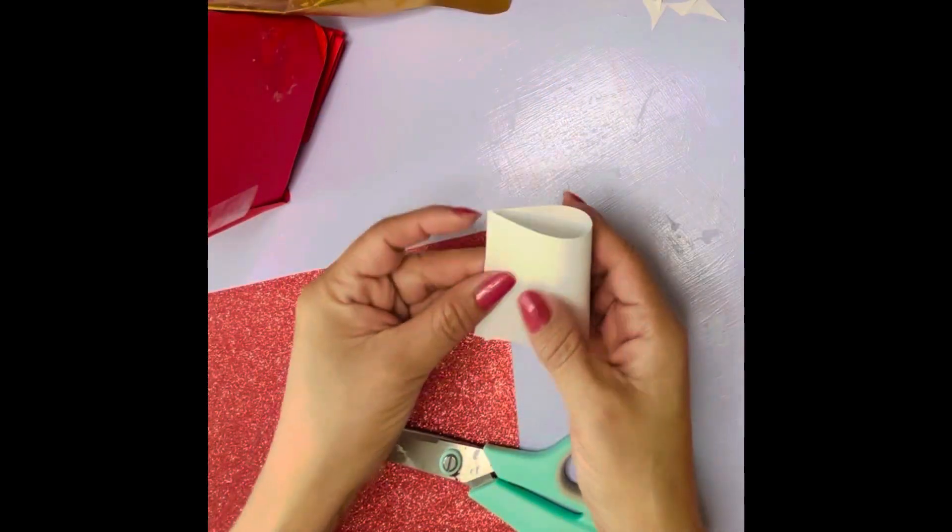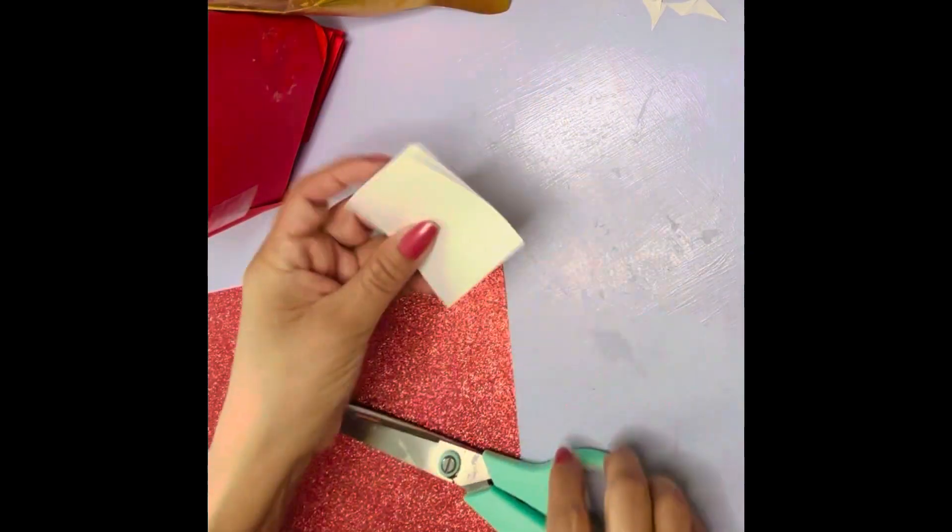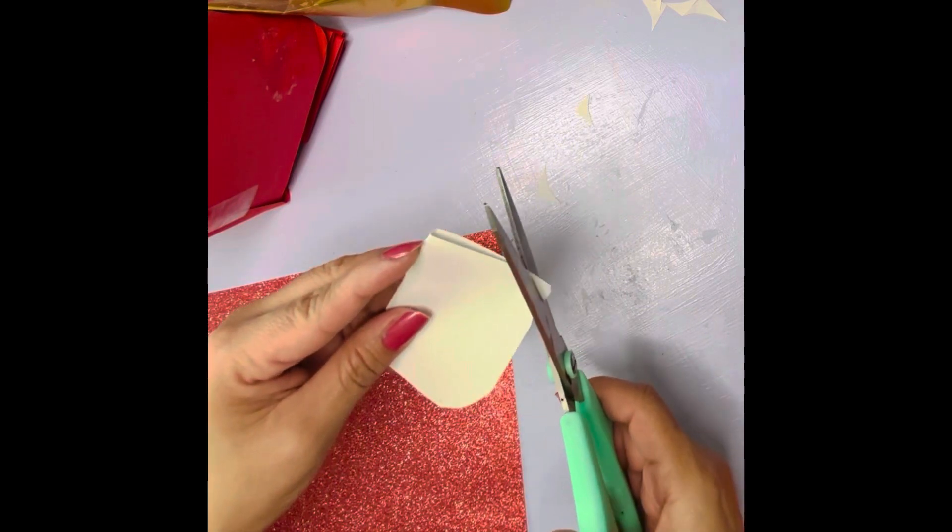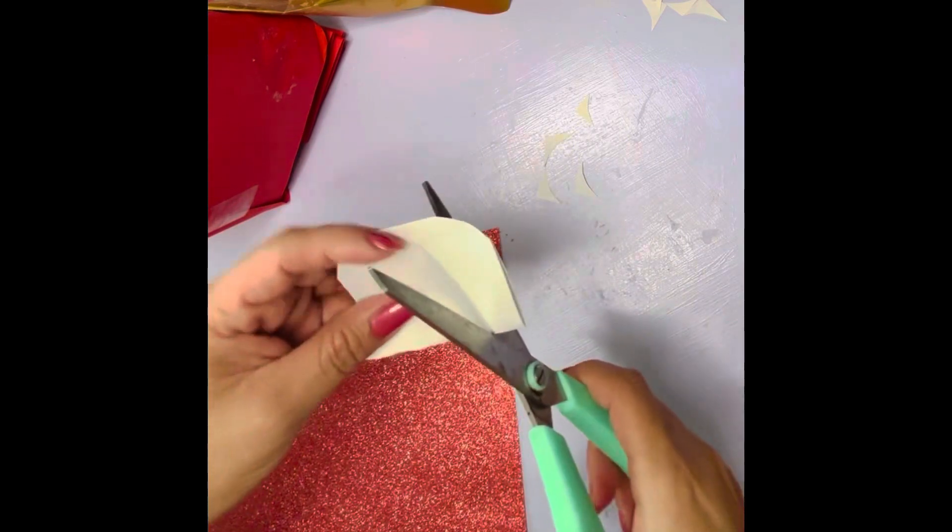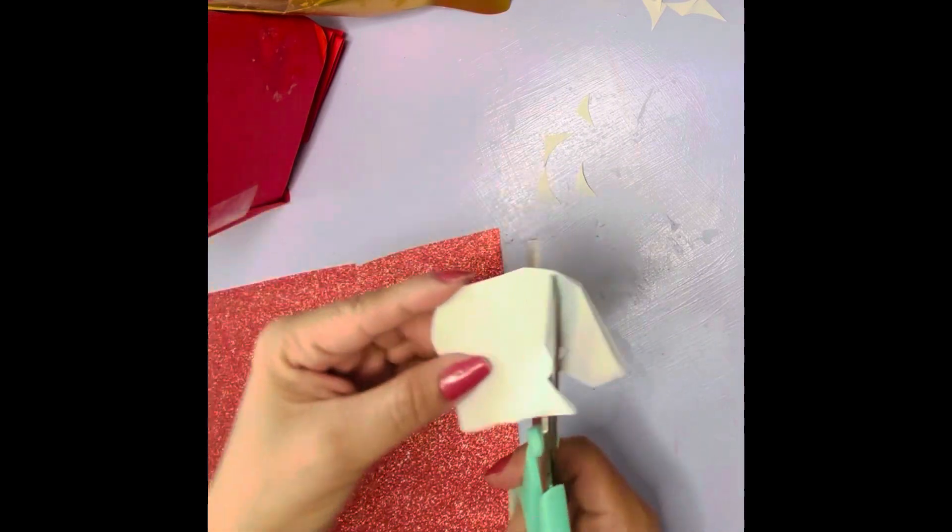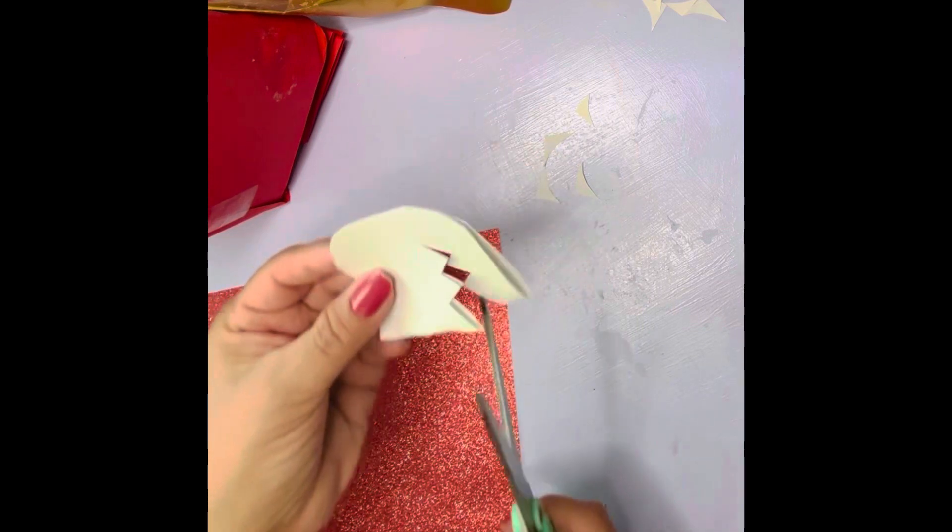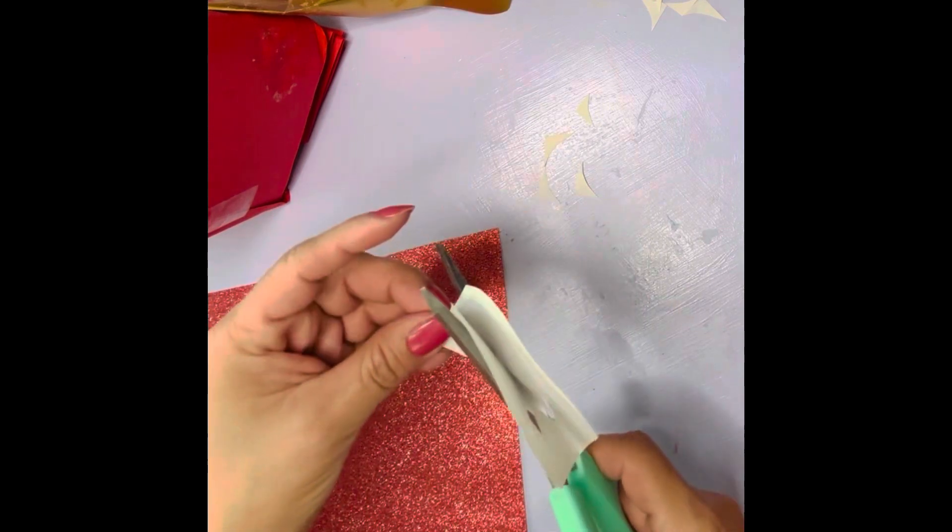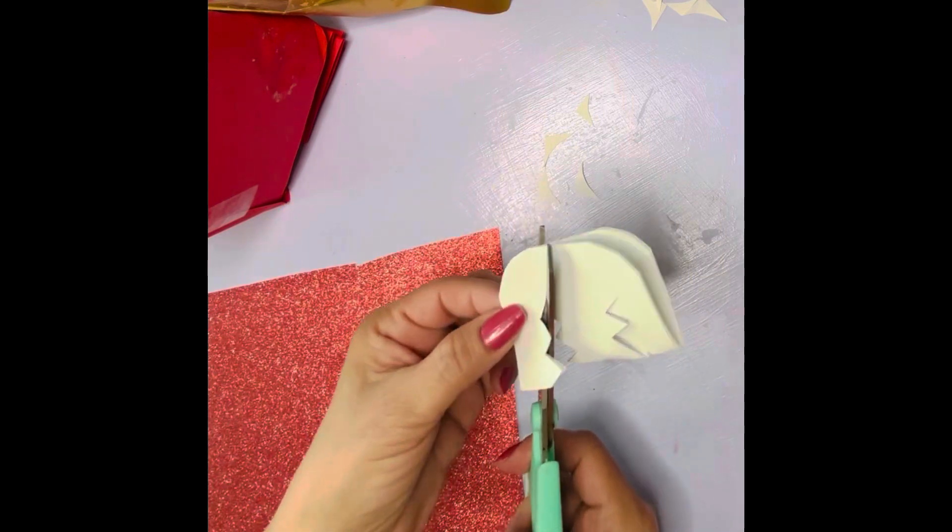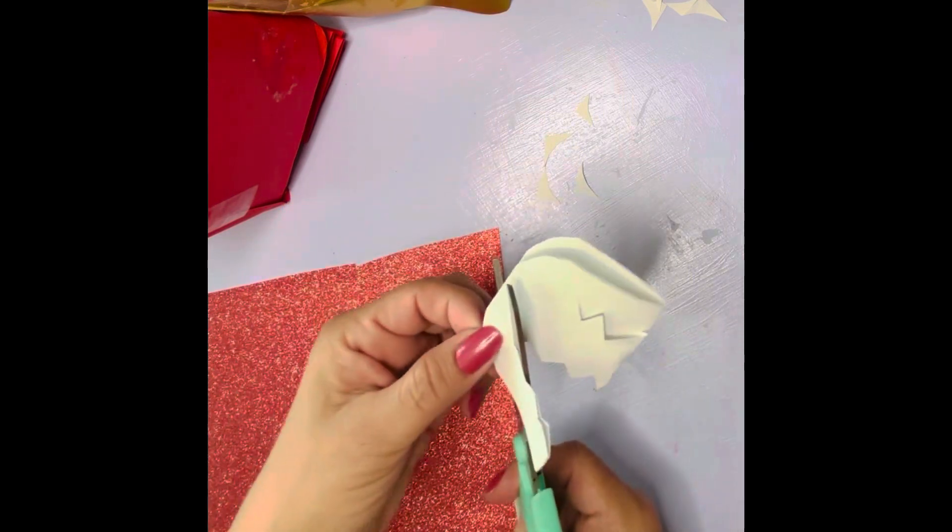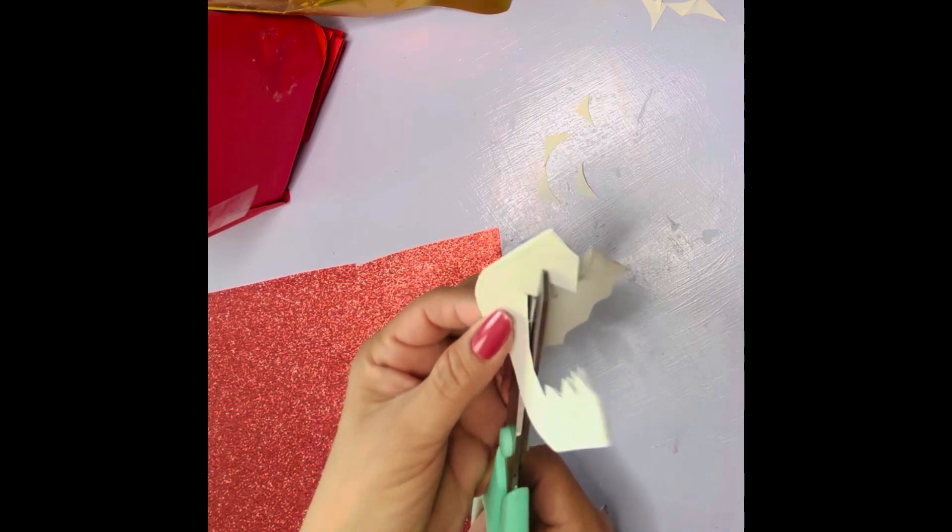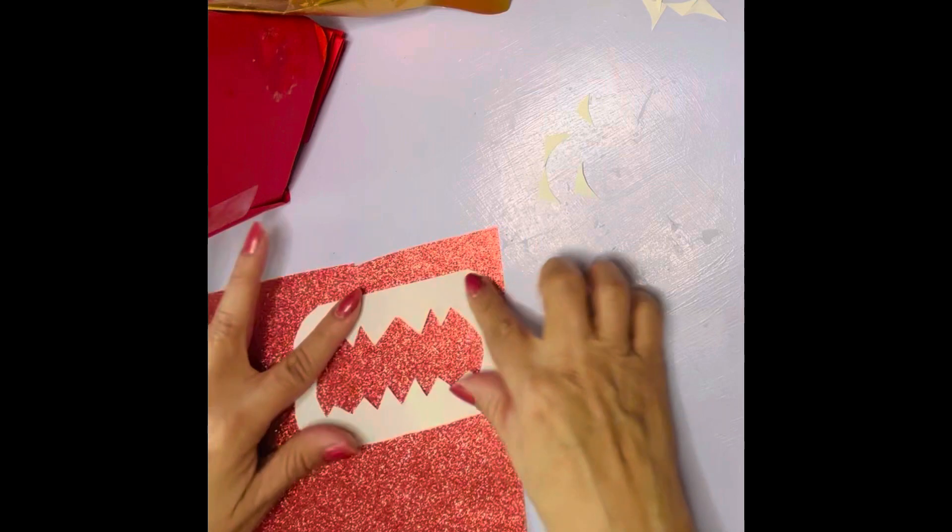Now I'm going to make the mouth by folding a small white rectangle. I'm going to curve the corners by cutting them and cut some zigzags inside to make some teeth. Next, I'm going to glue this onto the red shiny paper to make a mouth.